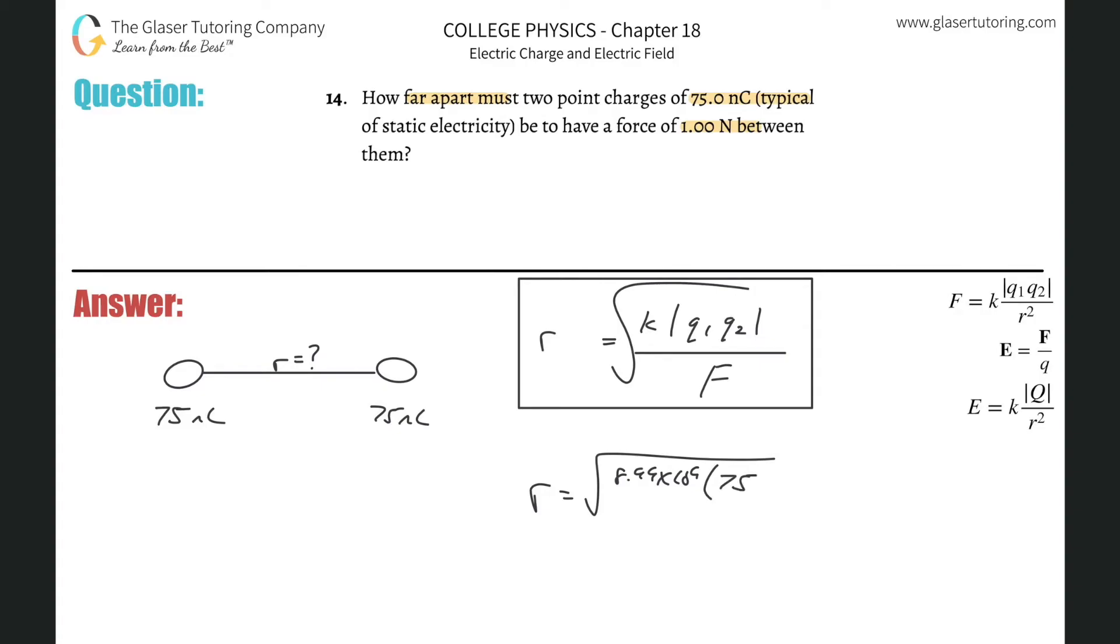So this is going to be 75 times 10 to the negative ninth coulombs. If you're wondering how I did that conversion so quickly, check out number 10. Divided by the force is 1, so all we now need to do is just plug this into the calculator.